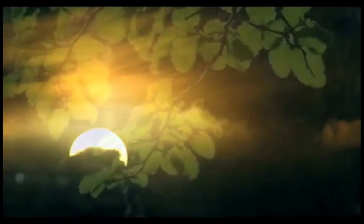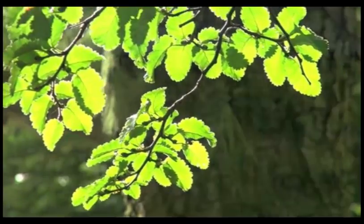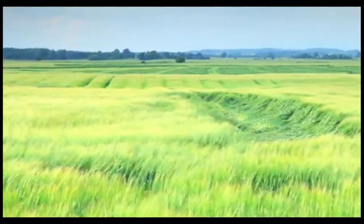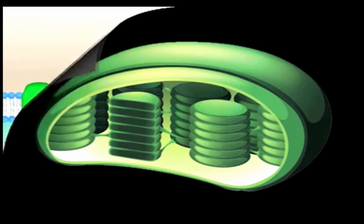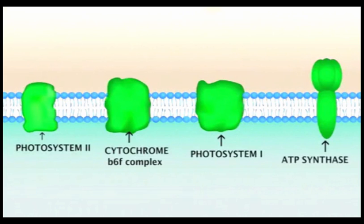The light-dependent reactions of photosynthesis occur in a number of complicated steps that are devoted to harvesting light energy from the sun, converting that energy into biologically useful chemical energy as well as reducing power while producing oxygen as a byproduct. The light reactions are carried out in the chloroplasts in four major protein complexes that are embedded in the thylakoid membranes. These complexes are known as photosystem II, the cytochrome B6F complex, photosystem I, and ATP synthase.